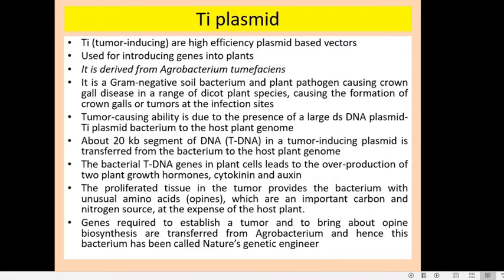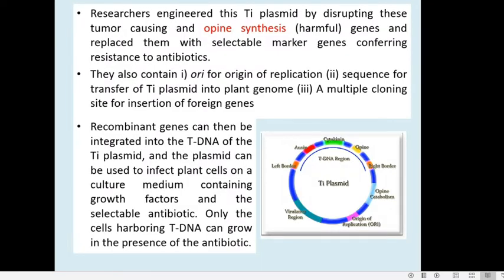The tumor causing ability of Agrobacterium is due to the presence of this plasmid called Ti plasmid. This Ti plasmid contains DNA which is called T-DNA, and this T-DNA is around 20 kilobases long. So we will now discuss the Ti plasmid and the T-DNA.